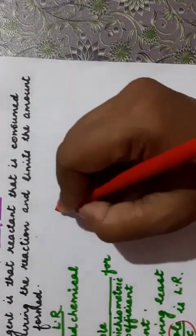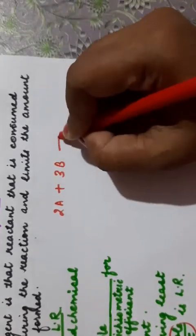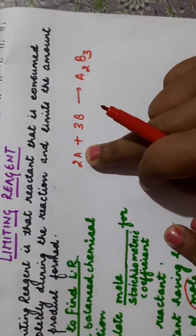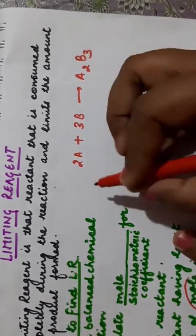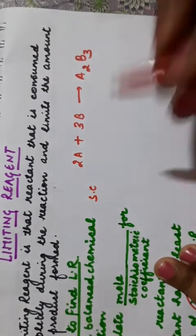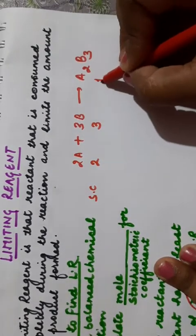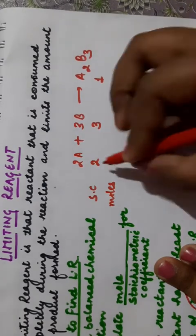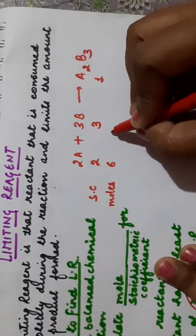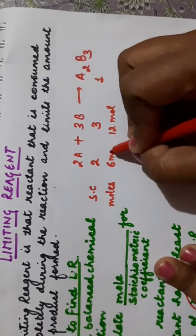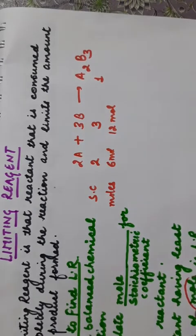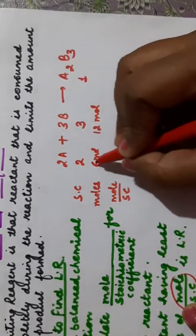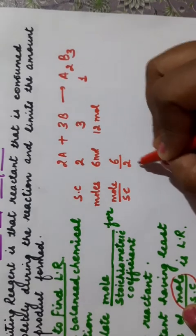Suppose the reaction is 2A + 3B → A₂B₃. This is a balanced equation: 2 moles of A and 3 moles of B give 1 mole of A₂B₃. So stoichiometric coefficients are 2 for A, 3 for B, and 1 for A₂B₃. Now suppose you are provided 6 moles of A and 12 moles of B. We have to find which is the limiting reagent. We calculate the ratio mole upon stoichiometric coefficient: for A it is 6/2 = 3, for B it is 12/3 = 4.